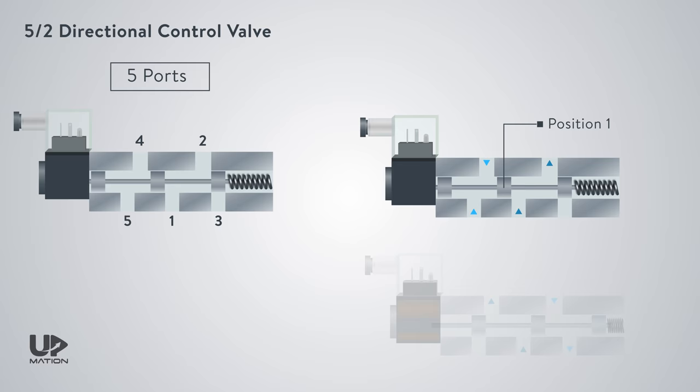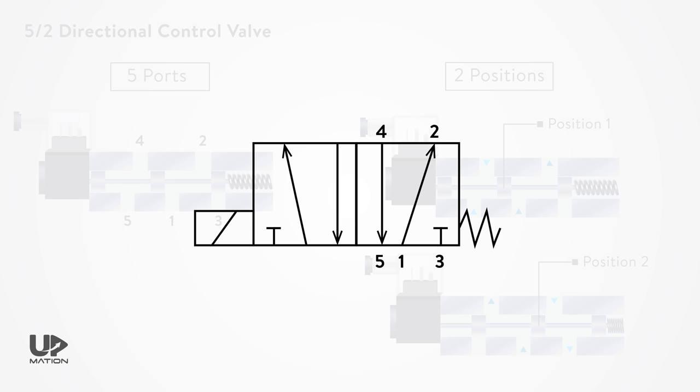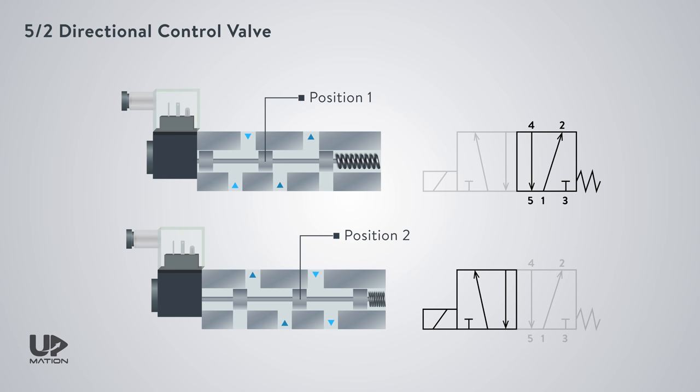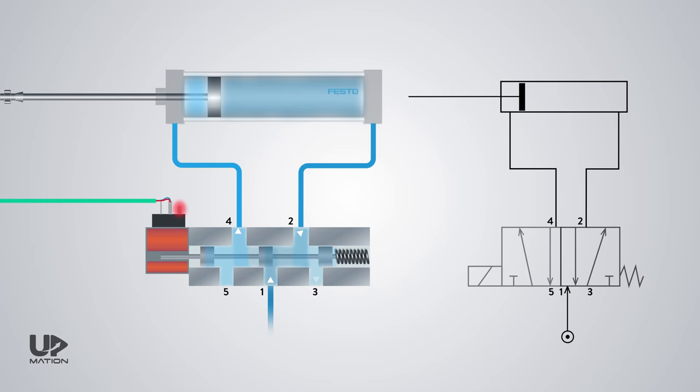Reading and interpreting the symbols may seem a little bit challenging sometimes. For instance, this directional control valve has such a symbol. Each square in the symbol represents a position or state. And in each state, some arrows show the path that air can flow through on that specific position.